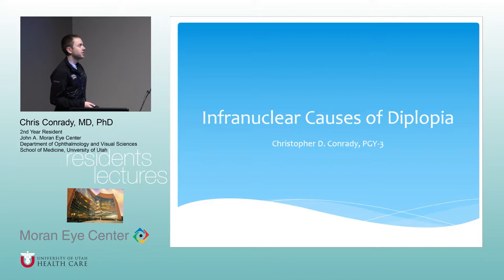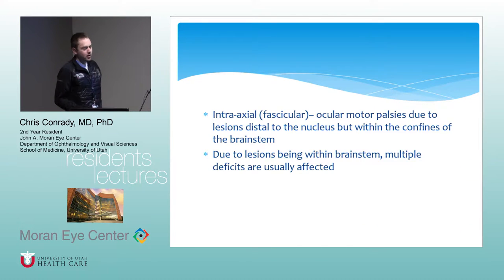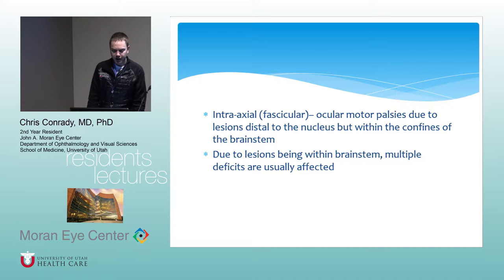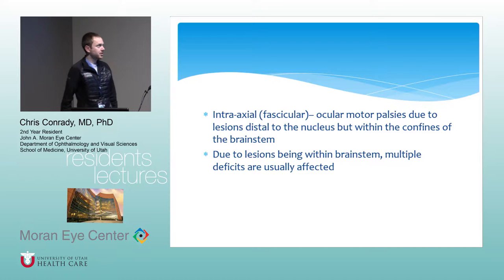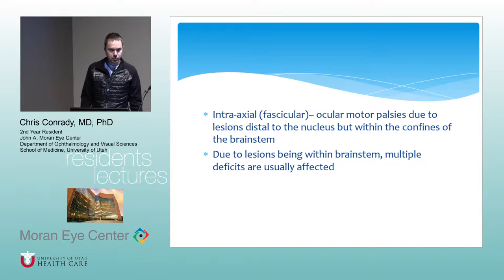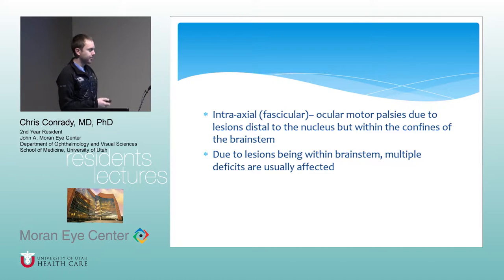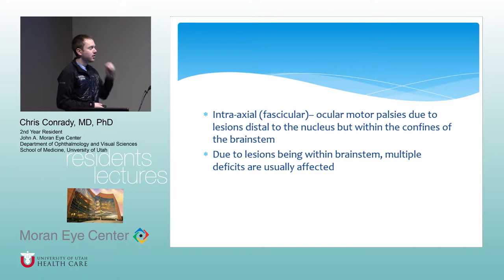I'll be talking about the infranuclear causes of diplopia — specifically binocular diplopia. First, let me talk about intra-axial or fascicular lesions, meaning anywhere inside the brain stem but not the actual nucleus itself. Usually when you get these fascicular lesions, multiple cranial nerves are involved because you're talking about the brain stem and very tight real estate there, so you get multiple deficits.